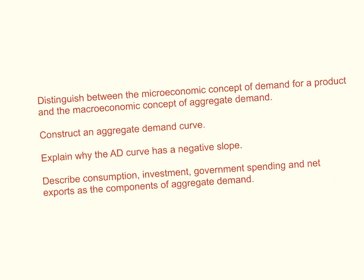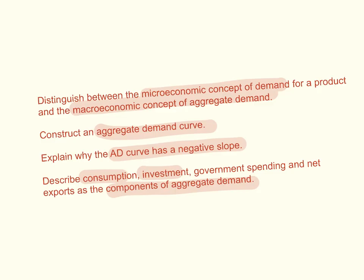In this video, I'm going to accomplish the following learning objectives. First, we're going to distinguish between the microeconomic concept of demand and the macroeconomic concept of Aggregate Demand. We're going to construct an Aggregate Demand curve and explain why this AD curve has a negative slope. Then we're going to describe the components of Aggregate Demand: consumption, investment, government spending, and net exports.